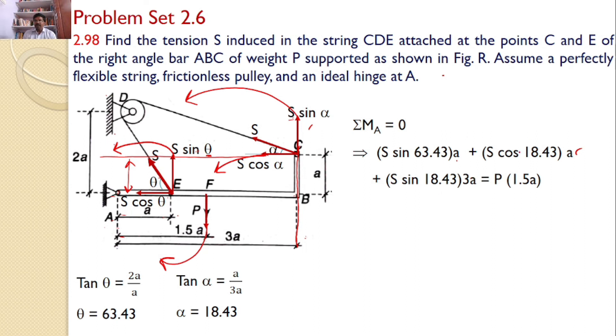So we can simplify this. The only unknown is S. So straight away you can calculate S in terms of P. So after simplification you will get 2.79S is equal to 1.5P or S is equal to 0.538P is the answer for the given problem.